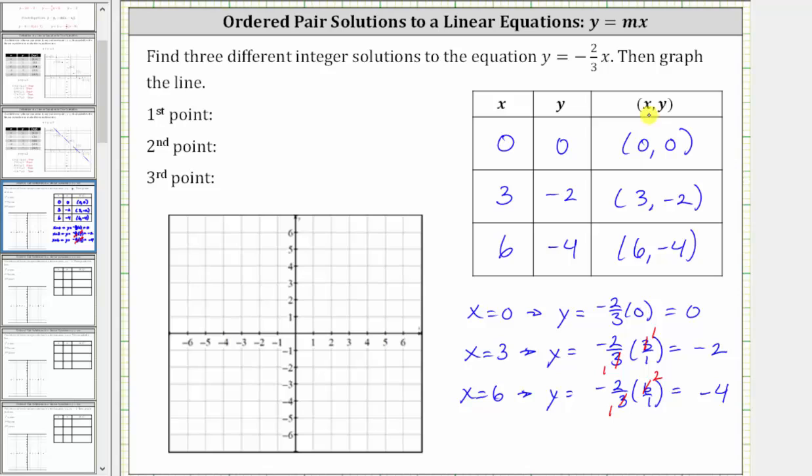And each of these ordered pair solutions represent a point on the graph of the line. So let's record these three ordered pairs as the three points.